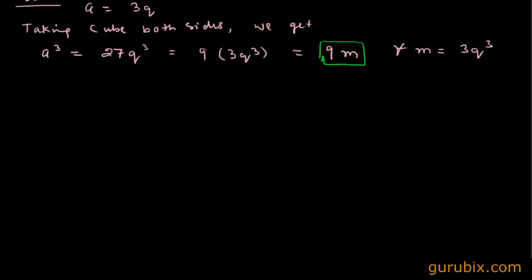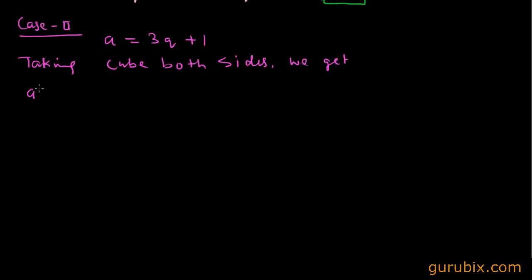Now, this is case second, when a equals 3q plus 1. Again, taking cube both sides, we get a cube equals 3q plus 1 cubed. And expanding it, we get 27q cube plus 27q square plus 9q plus 1.